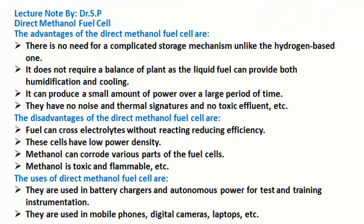The disadvantages of the direct methanol fuel cell are: Fuel can cross electrolytes without reacting, reducing efficiency. These cells have low power density. Methanol can corrode various parts of the fuel cell. Methanol is toxic and flammable, etc.